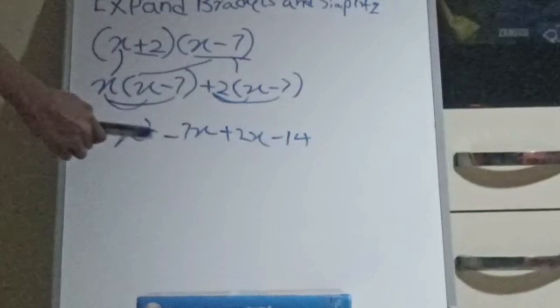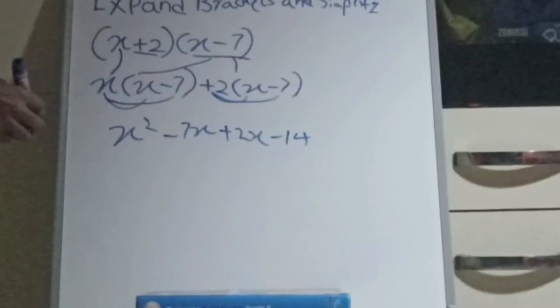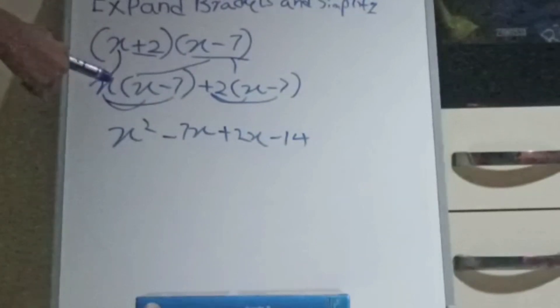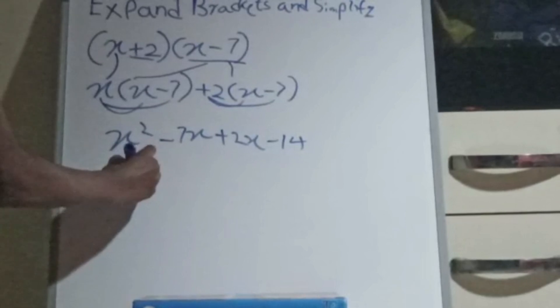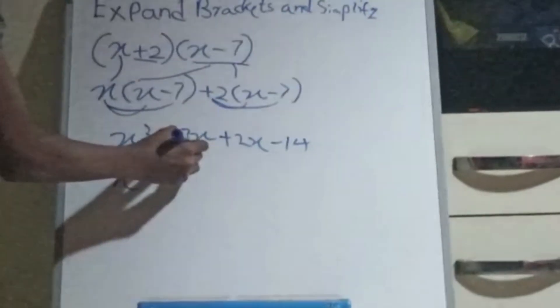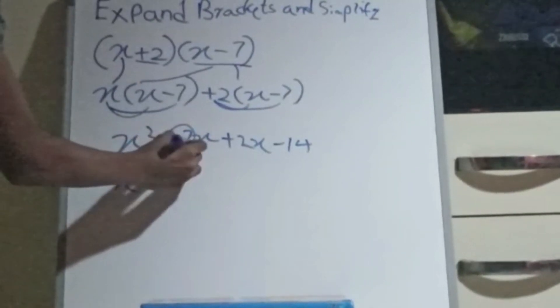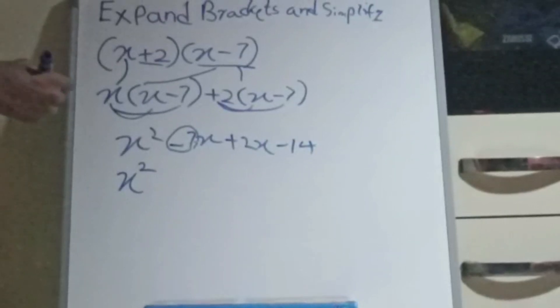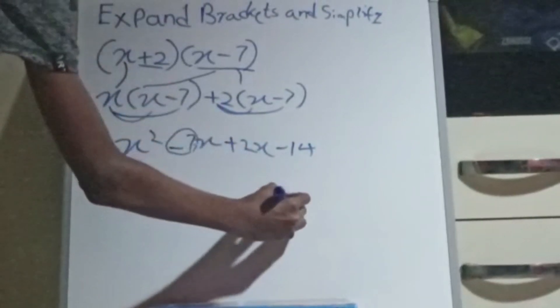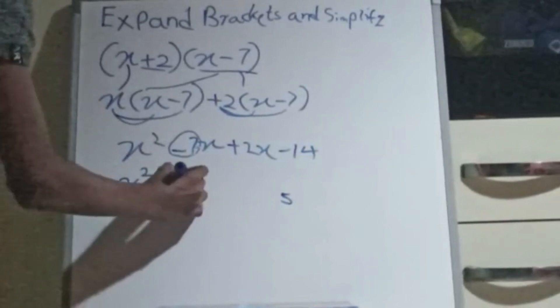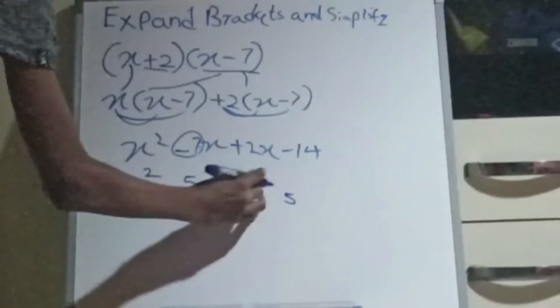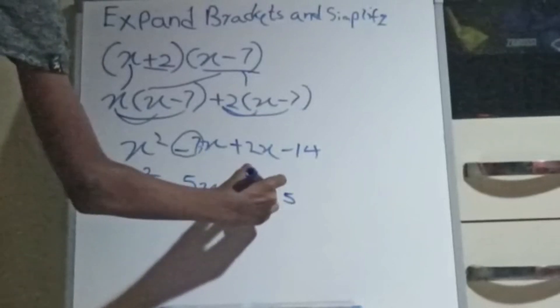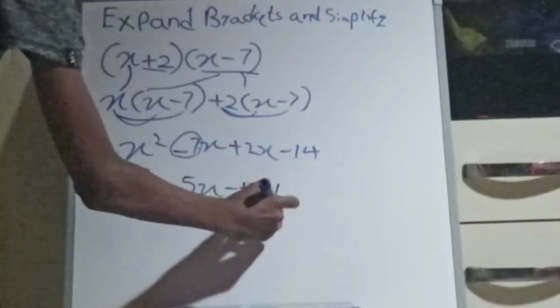When there are different signs, we could find the large number, put the sign, the largest number sign. So x square, this is the largest number. We subtract this. Then here is coming 5. The sign is minus. Minus 5x, minus 4, minus 14. So this is the answer.